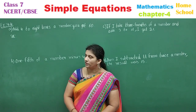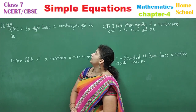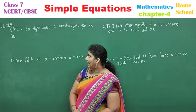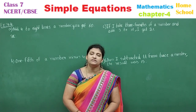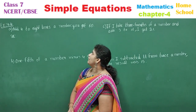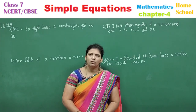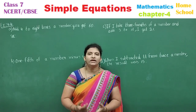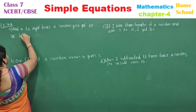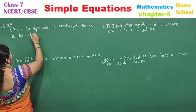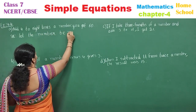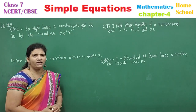See the first problem: 'Add 4 to 8 times a number, you get 60.' Add 4 means plus 4. Eight times a number means 8 into a number — we don't know the number. So our first step: let the number be x.